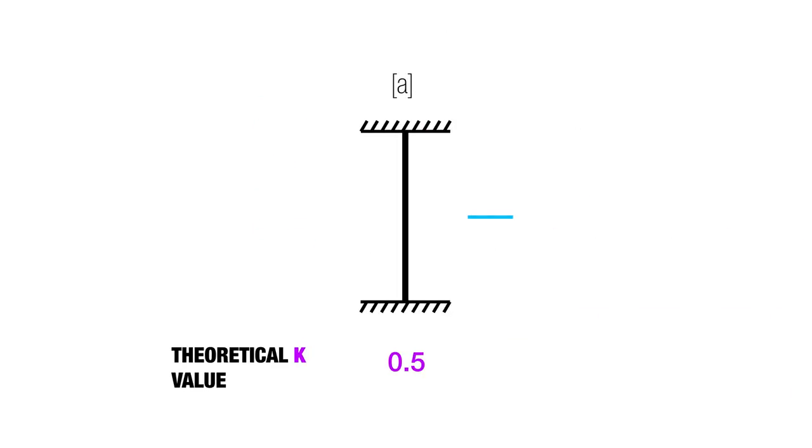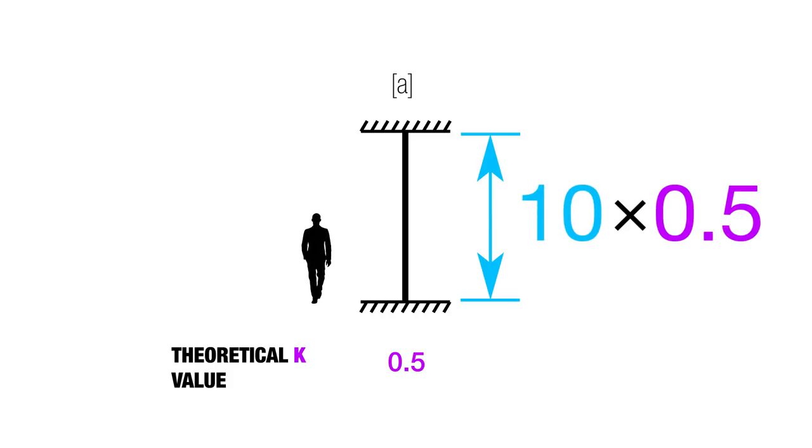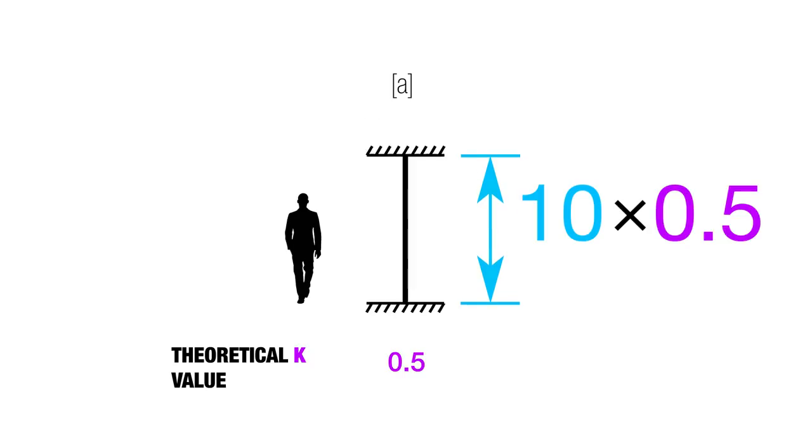So in this one right here, we're gonna take the length of the column and we're gonna multiply it by one half, we're gonna multiply it by 0.5. That means from a buckling point of view, this column of say 10 feet will behave more like a column that's only 5 feet.